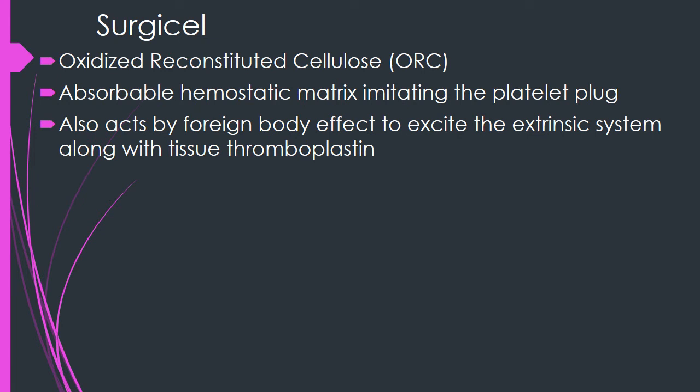Surgicel is oxidized, reconstituted cellulose. It comes in various forms such as NuKnit, Fibrillar, or the classical Surgicel. It forms an absorbable hemostatic matrix that imitates the platelet plug. It also acts by exciting Factor 7 via the extrinsic pathway, which then works together with tissue thromboplastin to hasten the coagulation process.